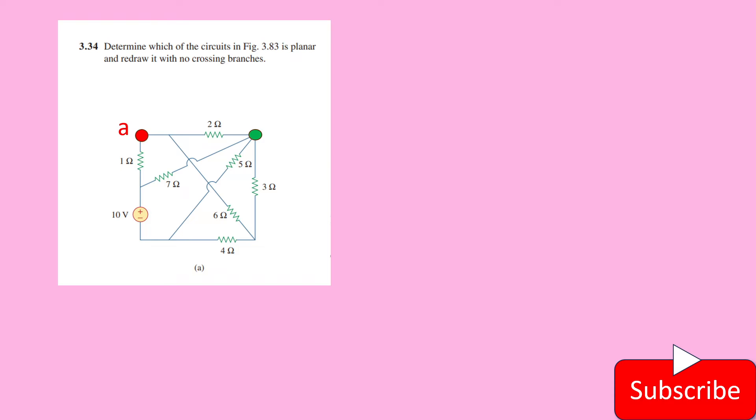So this circuit is now marked with the nodes. So here we have A node, B node, C node, D node and E node. There are five nodes.